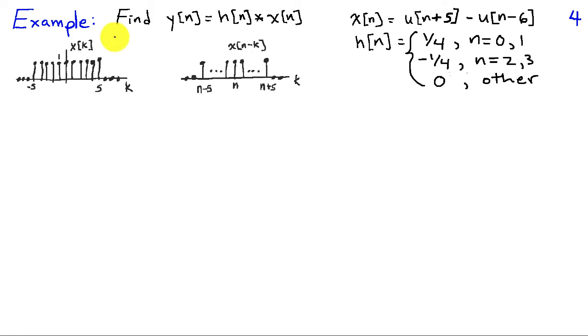So first we're going to graph x of k. As I said earlier, it's just a value 1 between minus 5 and 5 for k and it's zeros otherwise. So then when I reflect this, this is an even function. So x of minus k looks identical to x of k.